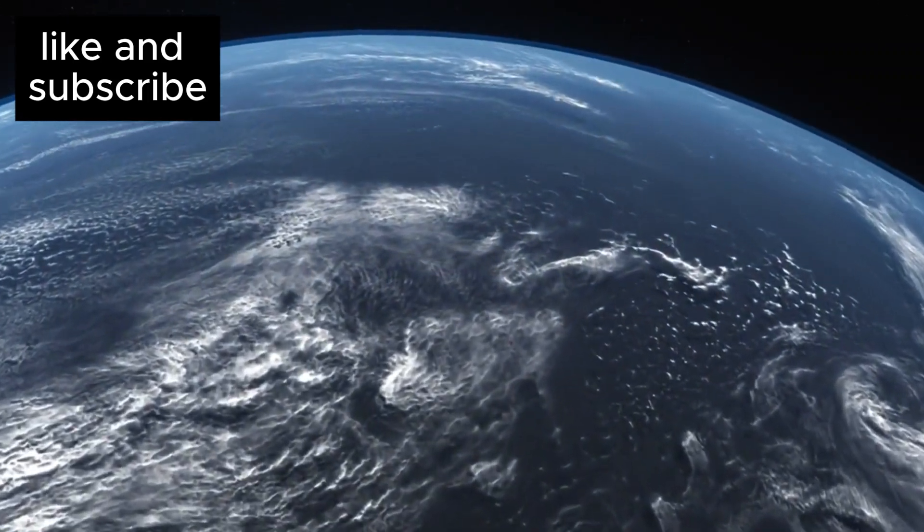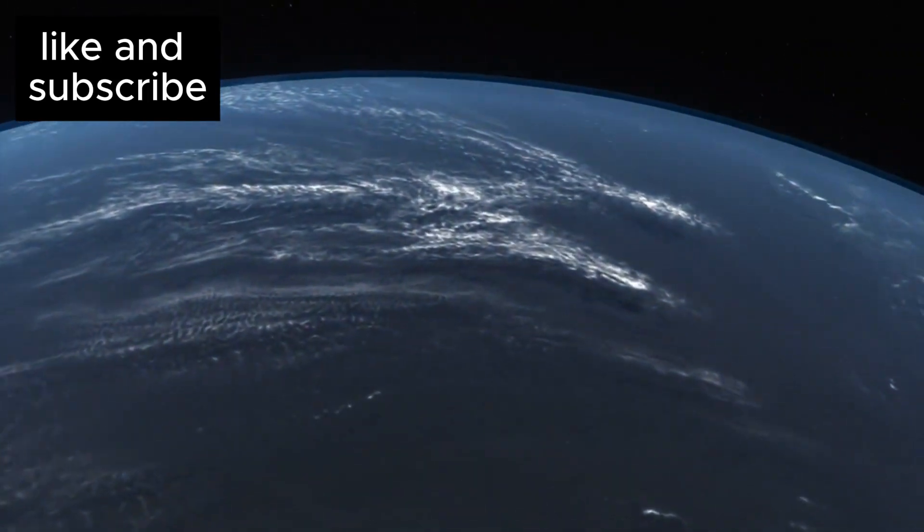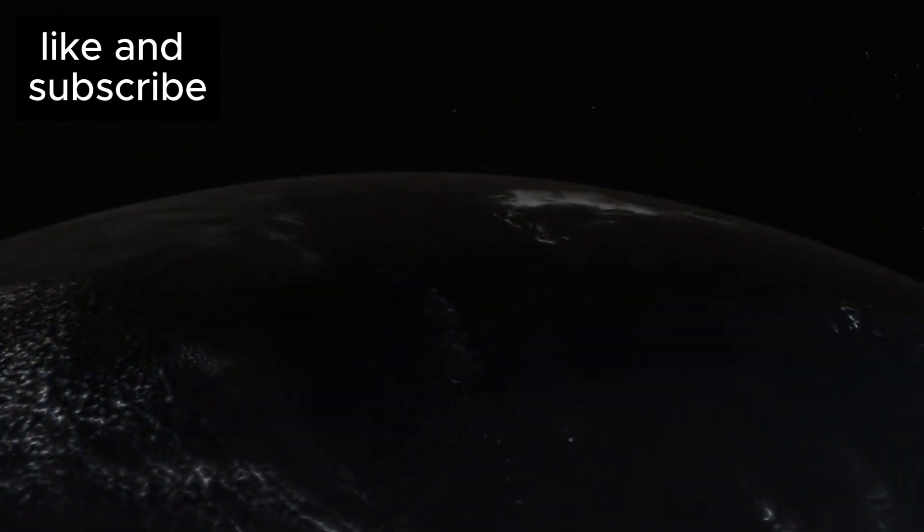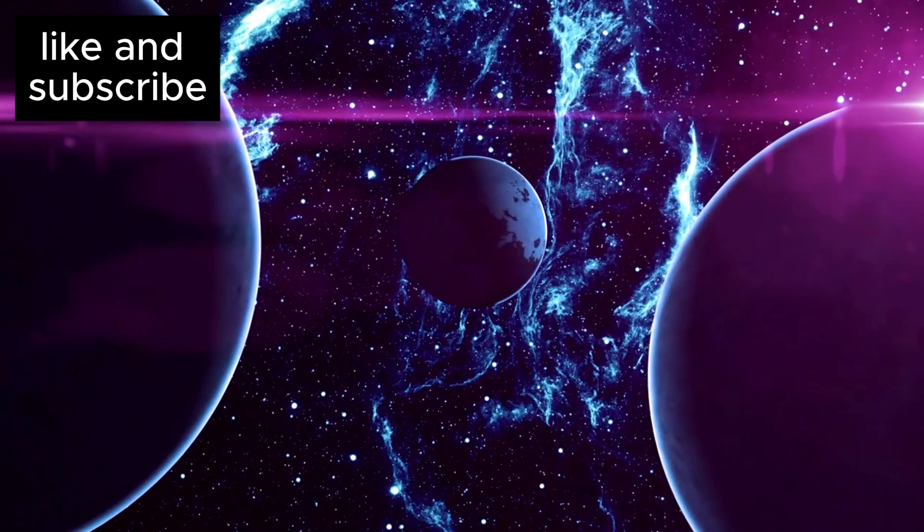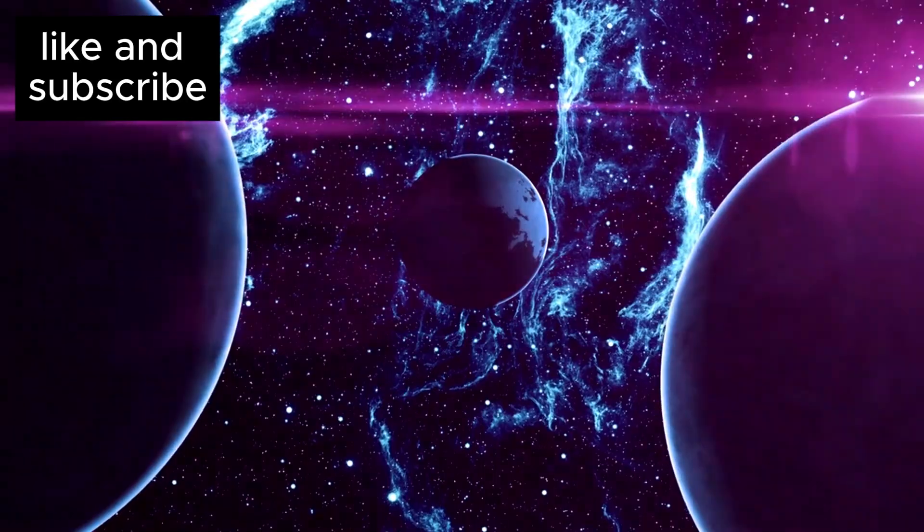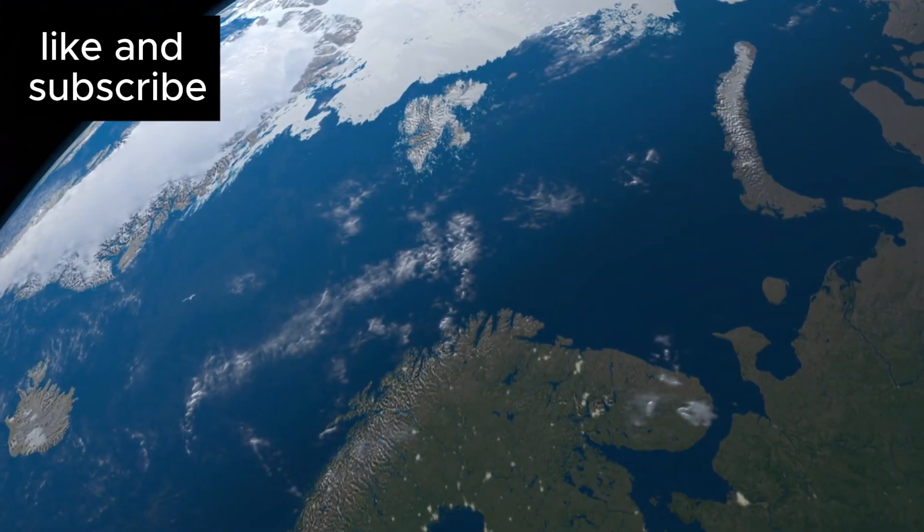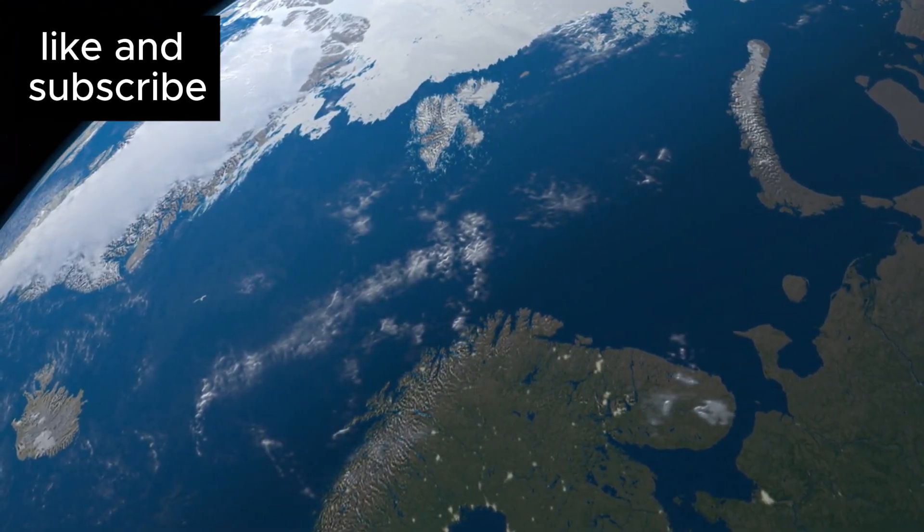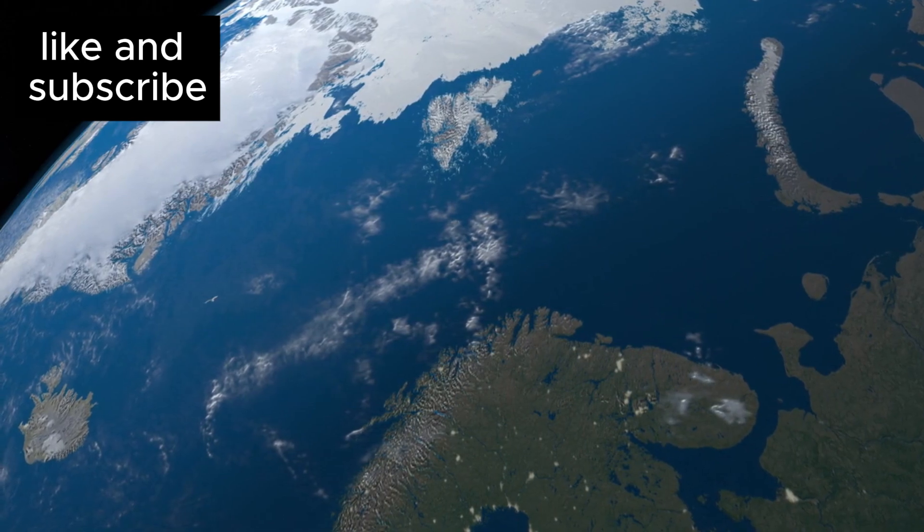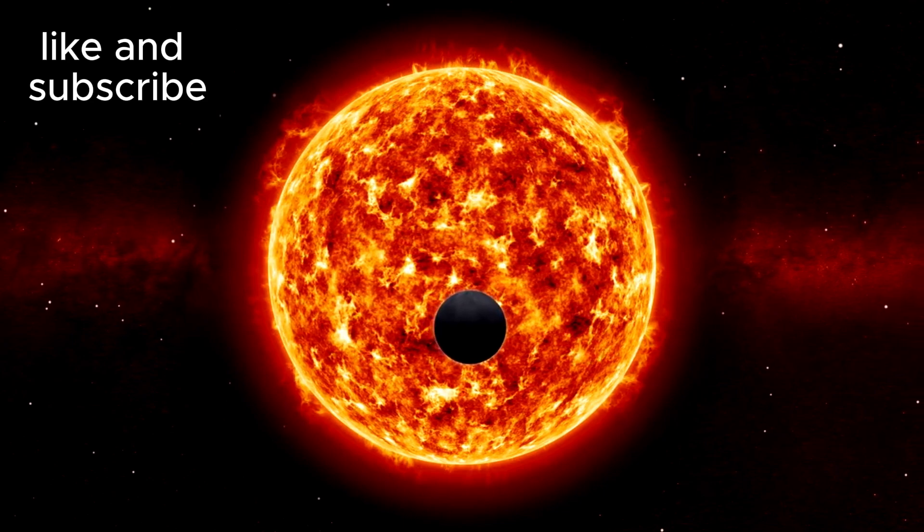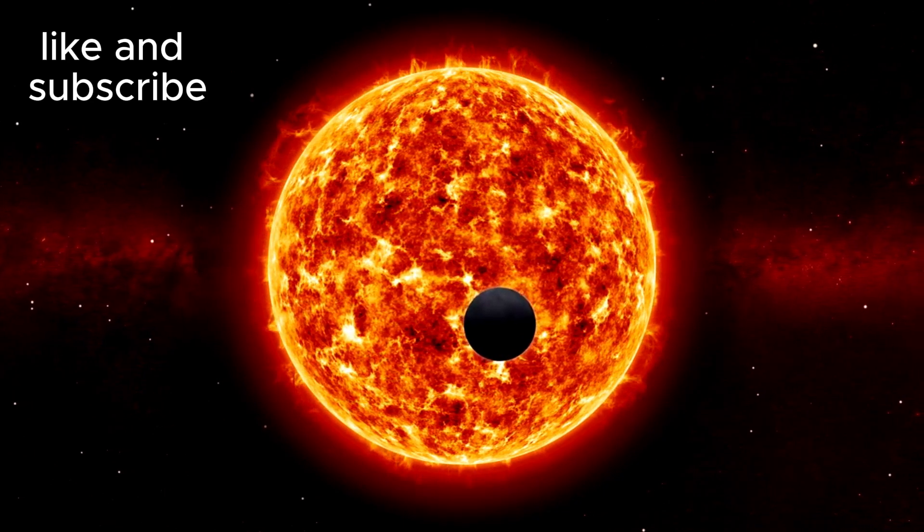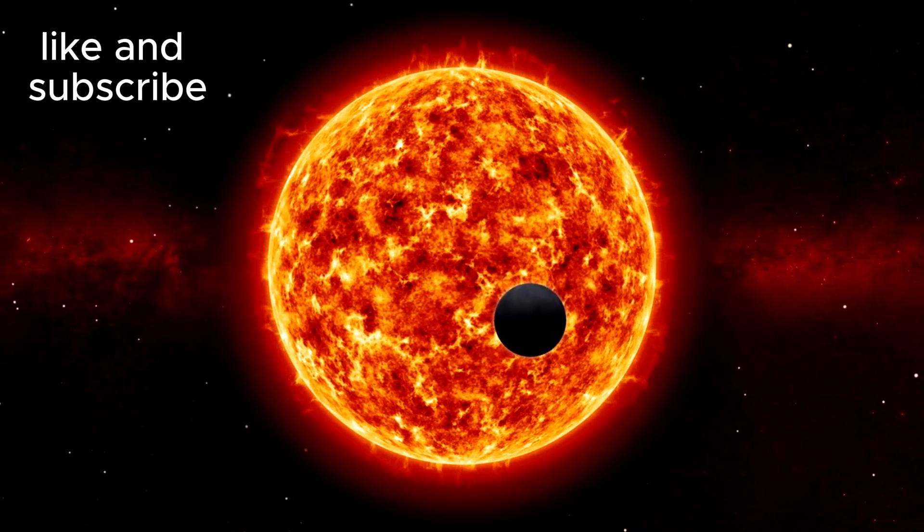If this is true, it means Pluto's ocean could have been around for billions of years, long enough for life to potentially emerge. And Pluto might not be alone in this. Other dwarf planets in the Kuiper belt, like Haumea and Makemake, could also harbor hidden oceans. This opens up an entirely new frontier for exploration and redefines our understanding of how life could begin in the universe.